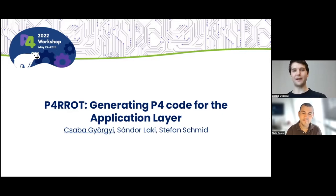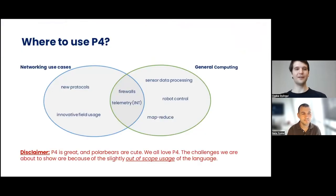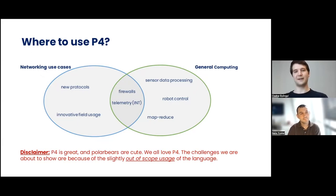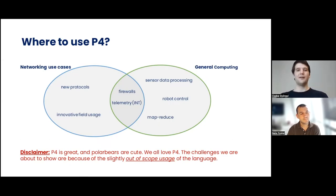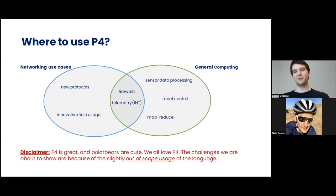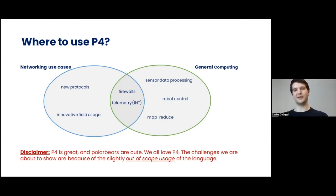I'm going to present Parrot, an open source library that generates P4 code for the application layer. P4 was originally designed for networking use cases and is doing great — we can implement new protocols and innovative fields faster than ever. There are also some other use cases that require a bit more general computing, like firewalls or in-network parameter aggregation, and some may even attempt to use P4 for totally general computation tasks.